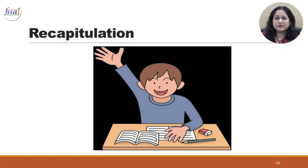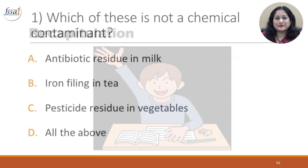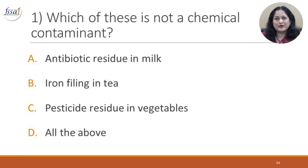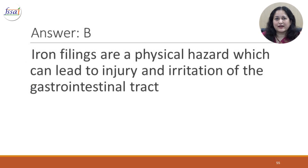Now let us recapitulate some important things learned. Question 1: Which of these is not a chemical contaminant? A. Antibiotic residue in milk. B. Iron filings in tea. C. Pesticide residue in vegetables. D. All the above. The answer is B. Iron filings are actually a physical hazard which can lead to injury and irritation of the gastrointestinal tract.